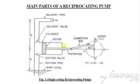You have the piston rod connected to the connecting rod, and the connecting rod in turn is connected to the crank. As the crank rotates, we get the reciprocating motion of the piston.